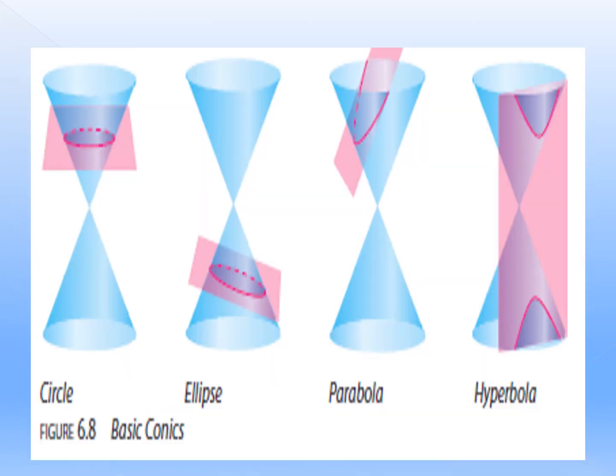So this is now the illustration of our first activity. As you can see on number one, there is a double nappe cone and the plane figure cuts the double nappe cone horizontally, and as you can see, it forms a circle. For the second question, you can see that the plane intersects only one cone to form a bounded curve.